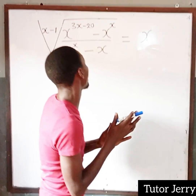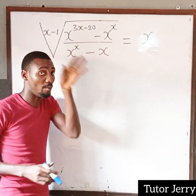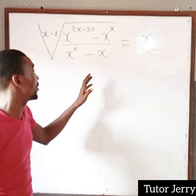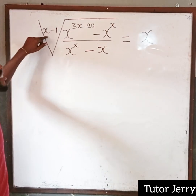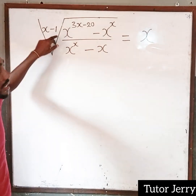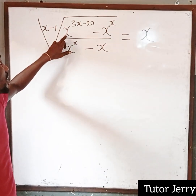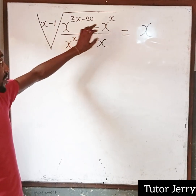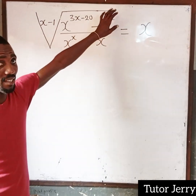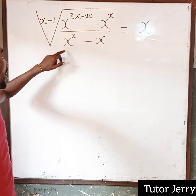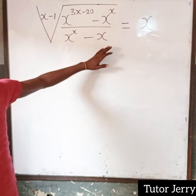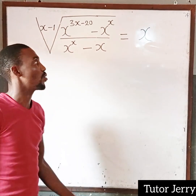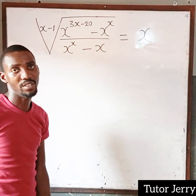Alright, let's solve the question. The question says the square root of x minus 1, into x to the power of 3x minus 20, minus x to the power of x, all over x to the power of x minus x, equals x. So how do we solve this?